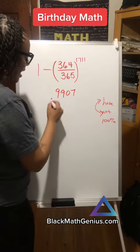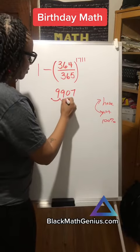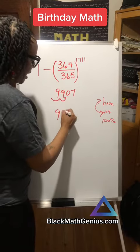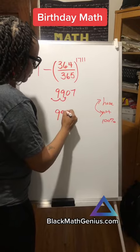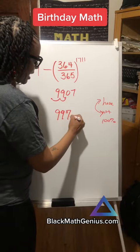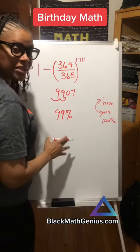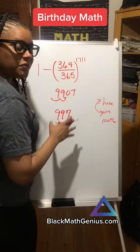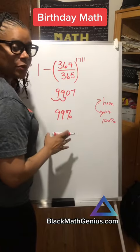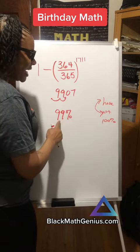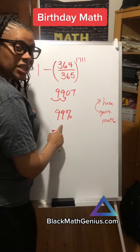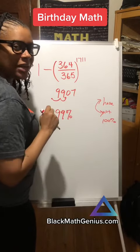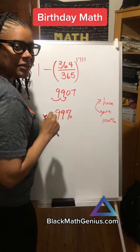And that — move the decimal two places to the right — is about 99%. So in a room of 59 people, there's a 99% chance that at least two people in that room have the same birthday.